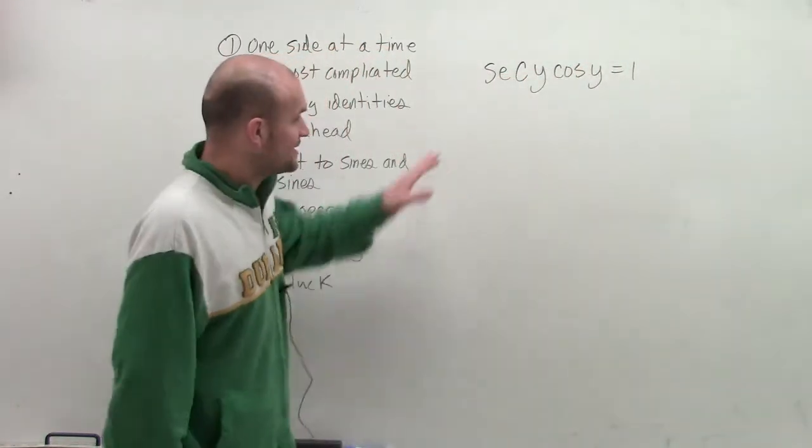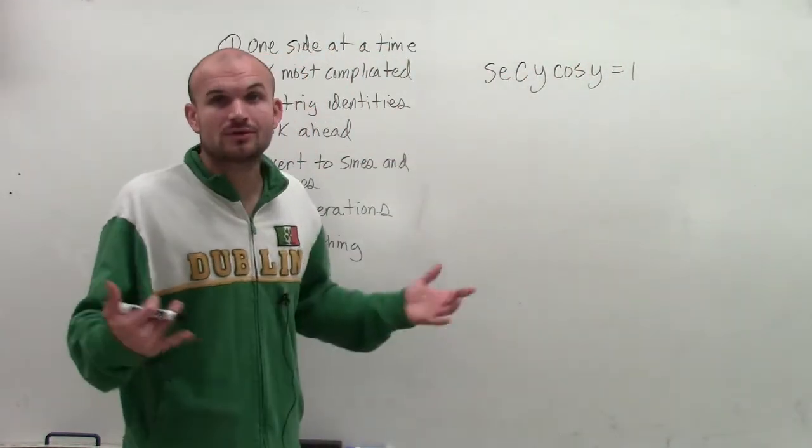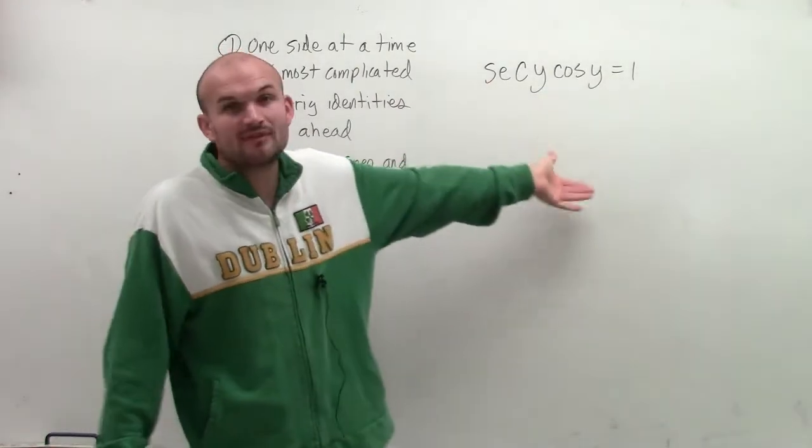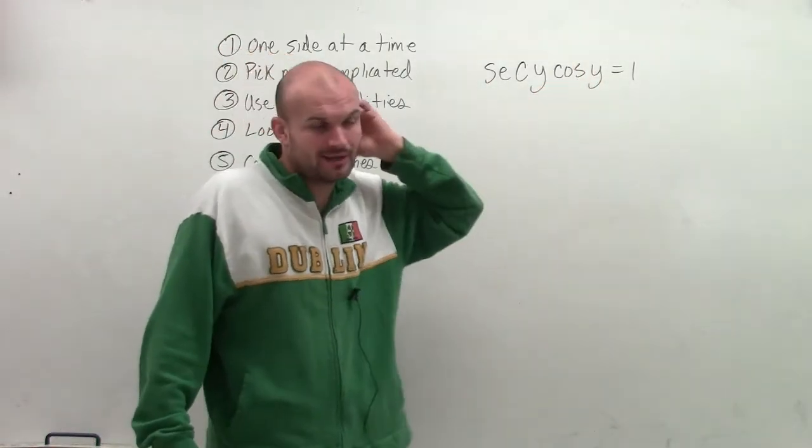So for verifying this trigonometric identity, I have secant of y times cosine of y equals 1. So obviously, I'm going to want to simplify one side, which is going to be my most complicated side, which will be here on the left.